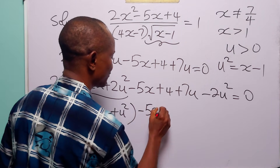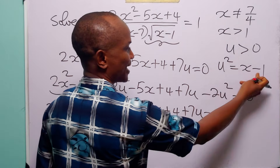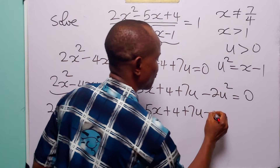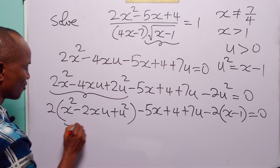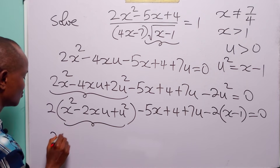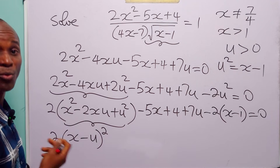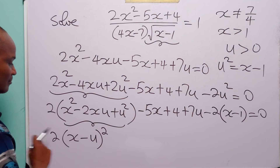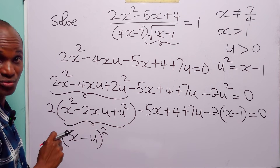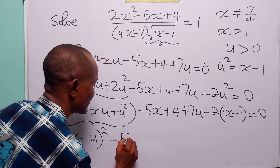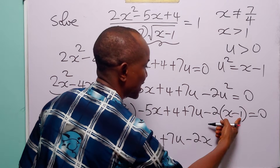Then we have minus 5x plus 4 plus 7u minus 2u squared. But remember that u squared is equal to x minus 1, so we have minus 2 times (x minus 1). Now, we can see that x squared minus 2xu plus u squared is a perfect square, so here we have 2 times (x minus u) squared. If we expand this bracket, we get x squared minus 2xu plus u squared, which is exactly what we have.